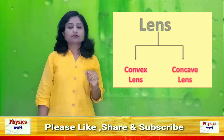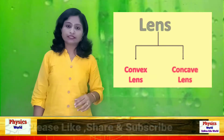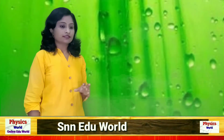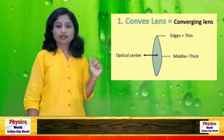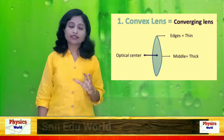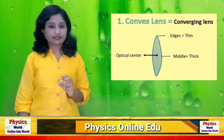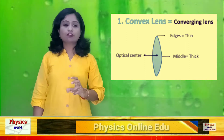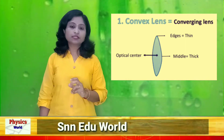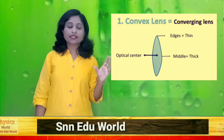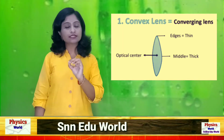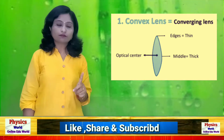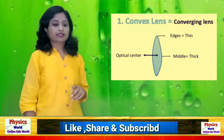Let's see one by one in detail, starting with the first type — the convex lens. The convex lens is a convergent lens. What is the meaning of convergent? When all the rays of light concentrate on a single point, it is called convergent. So the convex lens is a convergent lens.